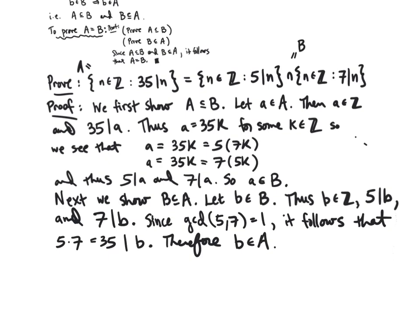The book proves this using the Fundamental Theorem of Arithmetic about prime factorizations, but the FTA is itself proven using the proposition we used here. So logically speaking, this proof is simpler. You can assume the Fundamental Theorem of Arithmetic on homework or exams, but I prefer to avoid using it when possible.